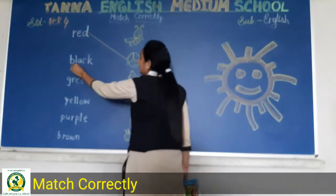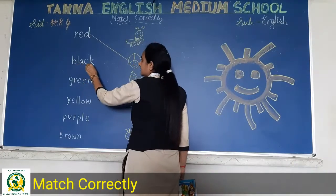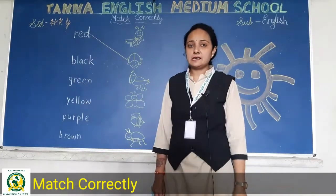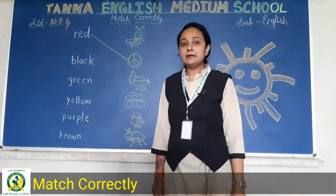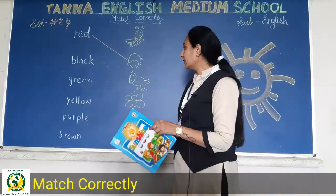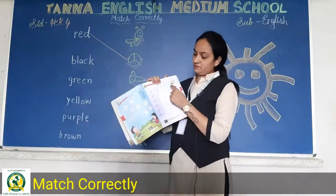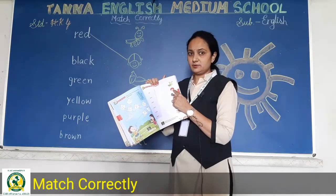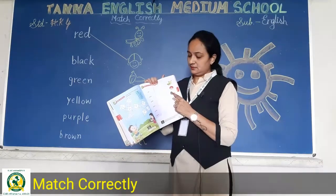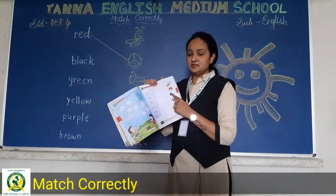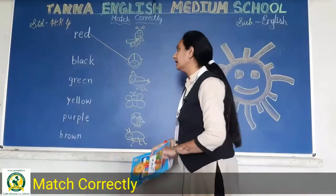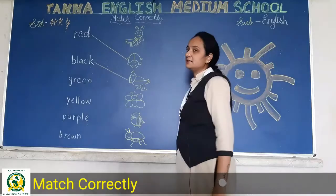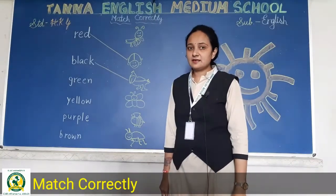B-L-A-C-K, black. Toh black color ka kya hai? Yeh toh red color ka hai — this is black. Ye jo crow hai woh black color ka hai. Toh hum crow ko black color ke saath match karayenge. Aapko bhi match karna hai.